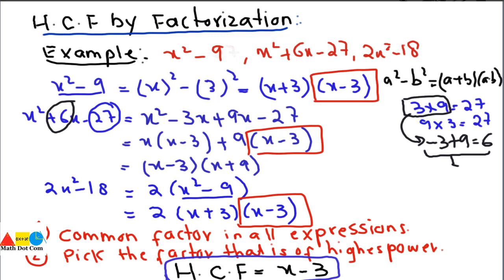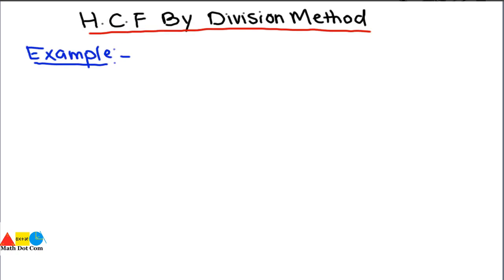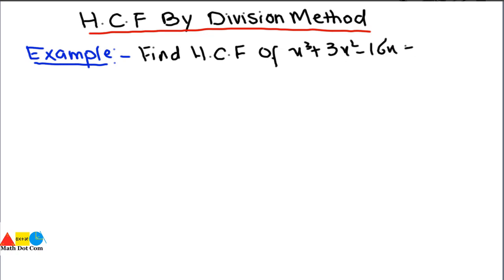Now we will see how you can find the HCF by division method. We use this method where expressions are quite complex. The example is: find the HCF of x³ + 3x² − 16x + 12 and x³ + x² − 10x + 8. We will do it by the successive division method.